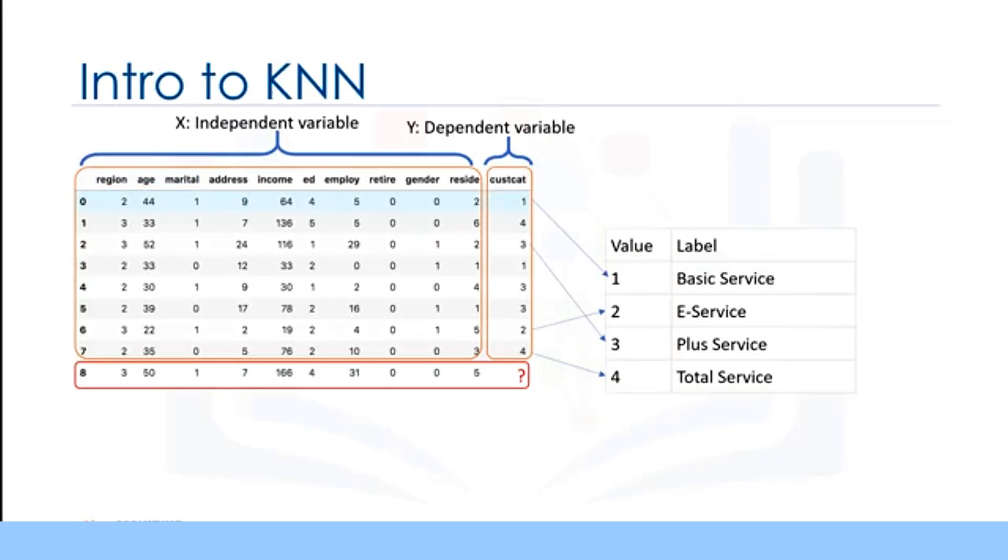Our objective is to build a classifier. For example, using the rows 0 to 7 to predict the class of row 8. We will use a specific type of classification called K-nearest neighbor.